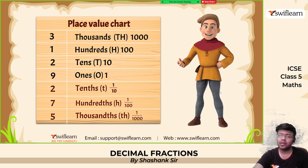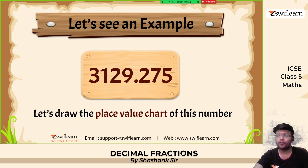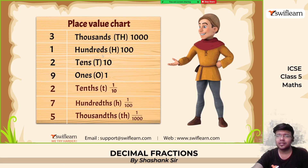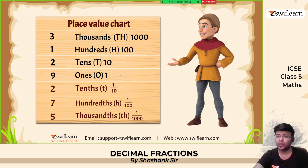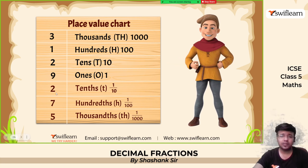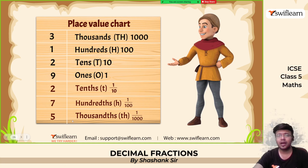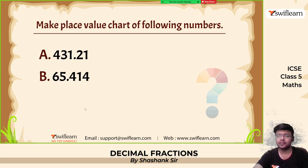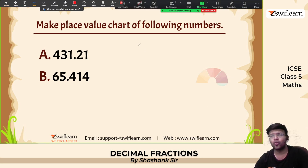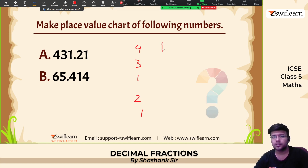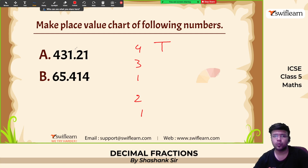Let's see this example — let us draw the place value chart of this number. Three is in the thousands place, one is in the hundreds place, two is in the tens place, nine is in the ones place. Now make a place value chart of the following number: 4, 3, 1, 2, 1 — assigning them to thousands, hundreds, tens, and ones places.